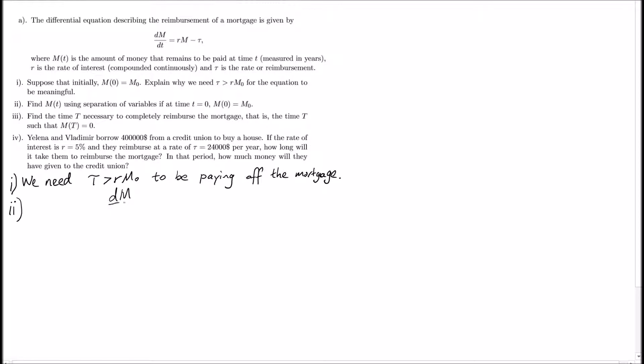For the second part, we need to find M in terms of t. We start with the differential equation dM/dt equals rM minus T, and we use separation of variables to bring all the function M on one side.